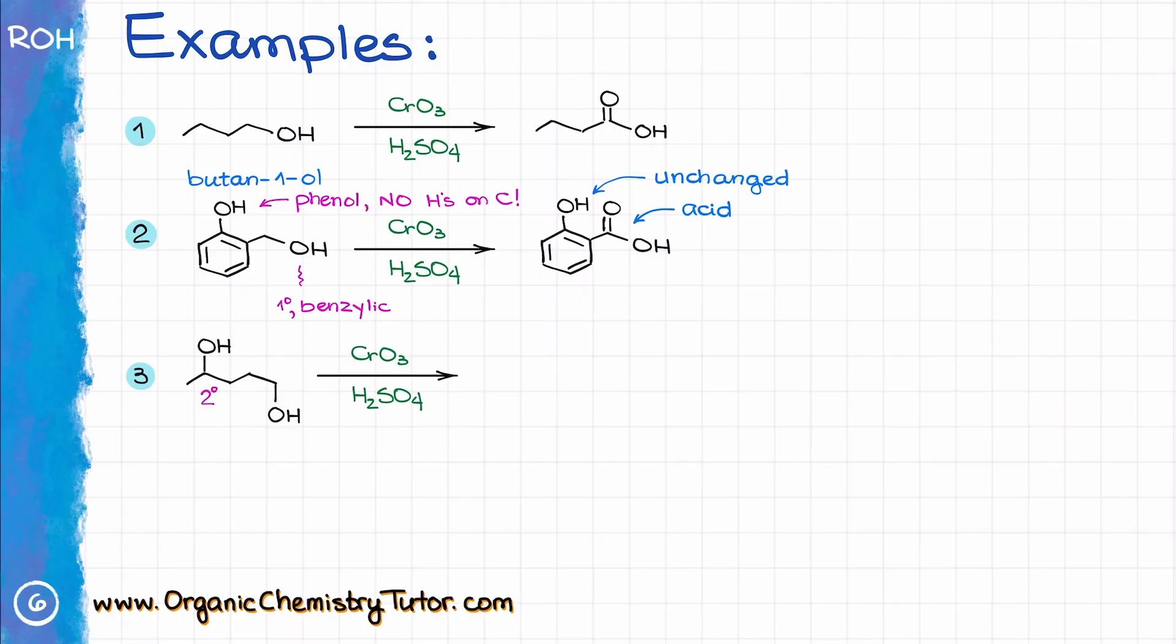In this example, we see the secondary and primary alcohol groups on the same molecule. Since both can undergo the oxidation, we'll end up with the ketone from the secondary alcohol and the carboxylic acid from the primary one.